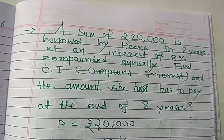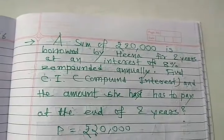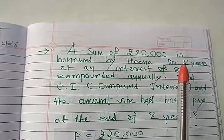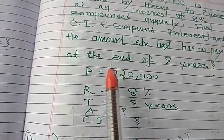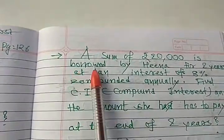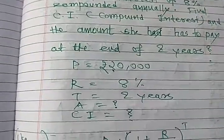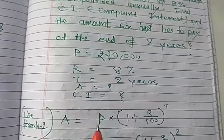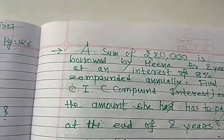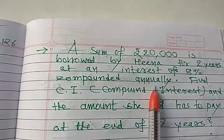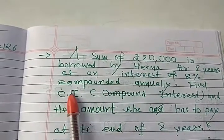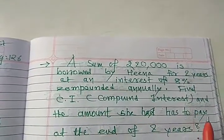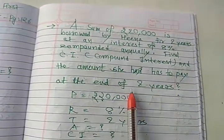Here is the sum to find compound interest. Read this sum. A sum of rupees 20,000, means P is given, principal amount P equal to 20,000. Is borrowed by Hina for 2 years, so T equal to 2 years. At an interest of 8%, so R is 8%. Compounded annually means you have to find compound interest. And the amount he has to pay at the end of 2 years. So CI to find, you have to use formula number 2.